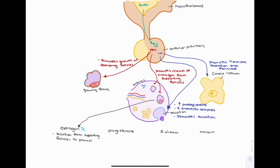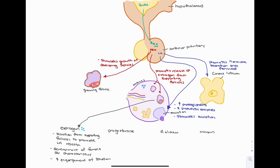To reiterate: follicle stimulating hormone promotes the growth of follicles. As the mature follicle develops, the rest of the secondary follicles become secretory, releasing estrogen which promotes the release of luteinizing hormone. Another role of estrogen is to promote the development of female secondary sex characteristics. Estrogen also promotes engorgement of the stratum functionalis — as estrogen levels rise, the stratum becomes engorged with blood and thickens, helping the uterus create the optimal environment for implantation.